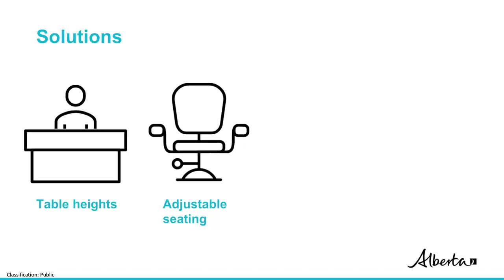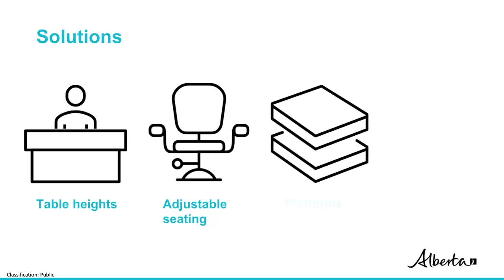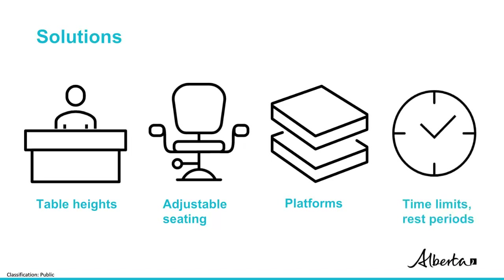For a worker of shorter stature, an engineering control could be to provide a platform for the worker to stand on, reducing awkward postures. An administrative control could be to limit the amount of time workers are in awkward postures, or to allow for rest periods to ease muscle demands on the body. This example shows there is an opportunity to explore many solutions that can be used individually or in combination. Remember to always use the hierarchy of controls to guide which options you select.